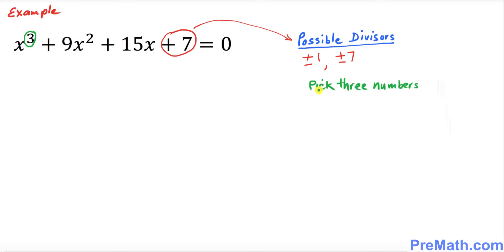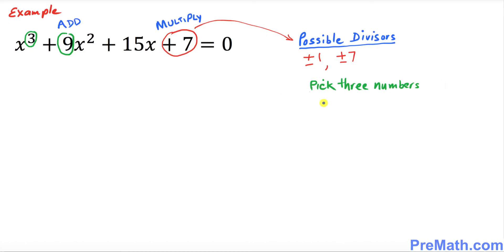We are going to pick three numbers among these possible divisors such that when you add them they add up to this number, and when you multiply them they add up to this one. We are going to pick 1, 1, and 7. If you add 1 plus 1 plus 7 that gives you 9, and if you multiply them 1 times 1 times 7 equals 7.